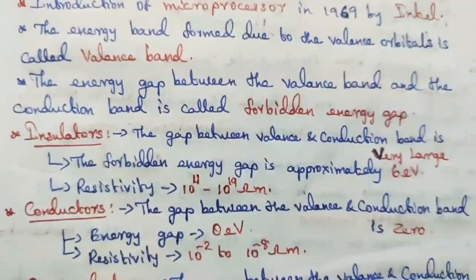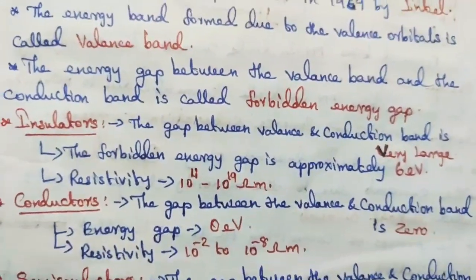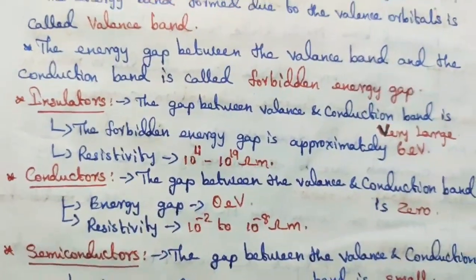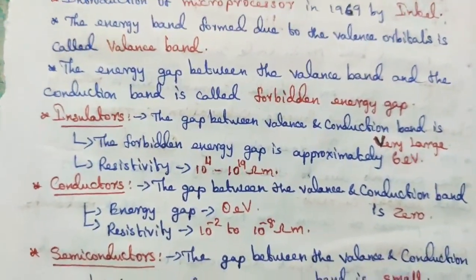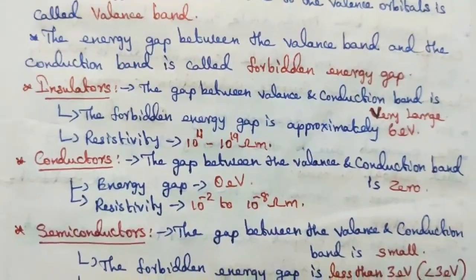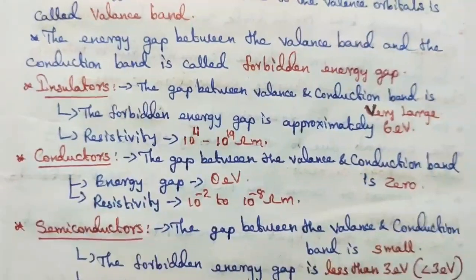In conductors, the gap between the valence band and the conduction band is zero. The energy gap between these two bands is 0 electron volt, there is no gap. The resistivity value is 10 power minus 2 to 10 power minus 8 ohm meter.